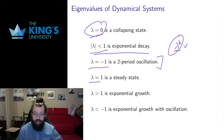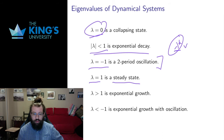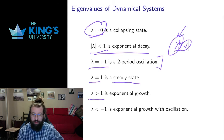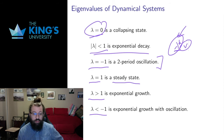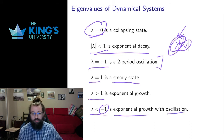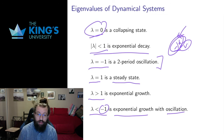If lambda equals 1, nothing changes — that's a steady state, analogous to the steady states of differential equations. If lambda is greater than 1, multiplying by itself repeatedly gives exponential growth. If lambda is less than -1, the absolute value still grows, but since it's negative it flips between positive and negative values, giving exponential growth with two-period oscillation. So there are a range of behaviors depending on the eigenvalue.